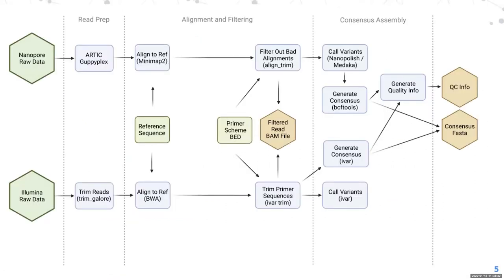Here's a flowchart summarizing how the ARTIC pipelines work. There are two ARTIC pipelines that people could get confused with: the one written by Nick and Will, which is purely for Nanopore data, and the ARTIC Nextflow pipeline which handles both Illumina and Nanopore but uses the first ARTIC pipeline internally. I know that's confusing, and I hope it doesn't confuse people too much.